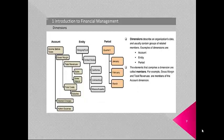Dimensions describe an organization's data and usually contain groups of related members. Examples of dimensions are account, entity and period. The elements that comprise a dimension are called members. For example, gross margin and total revenue are members of the account dimension.